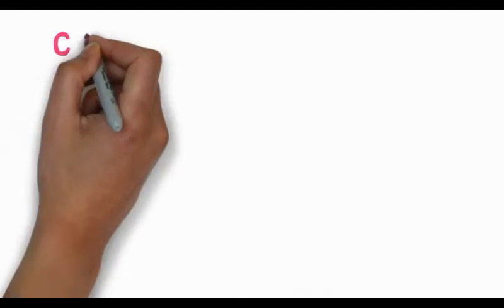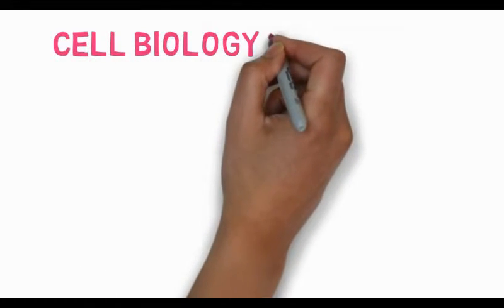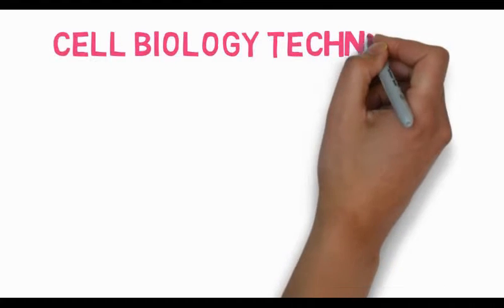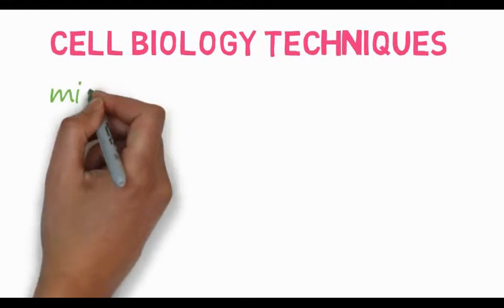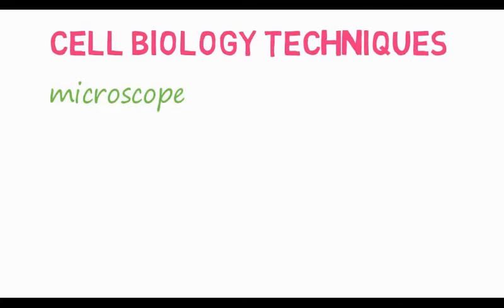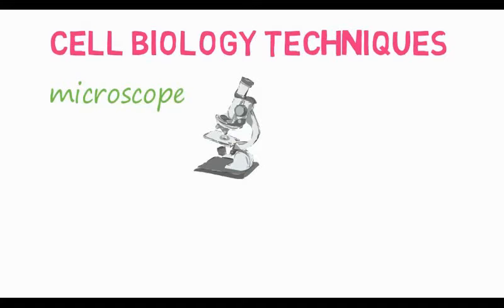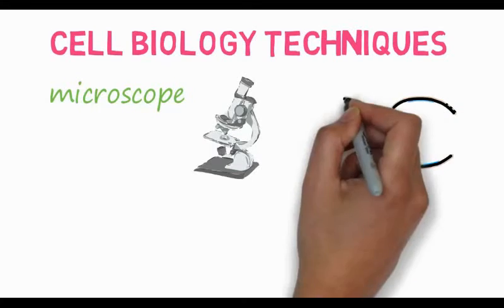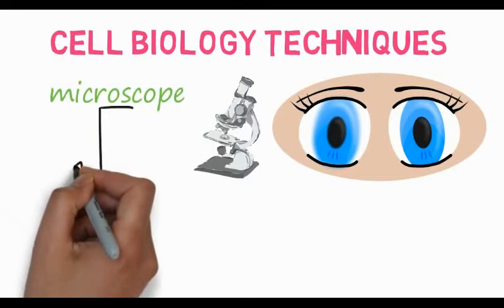The first technique used in cell biology is the microscope. Without a microscope, we cannot see the cell, so the microscope is the most important tool. There are three types of microscopes which differ in their resolution and magnification power.